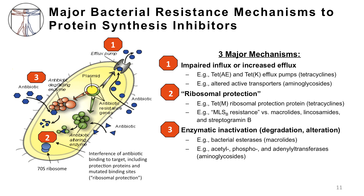With regard to the tetracyclines, the first two mechanisms are the most important. For example, bacteria may produce efflux pumps which pump tetracyclines out of the bacterial cell. Ribosomal protection is exemplified by the TETM ribosomal protection protein, which weakens the tetracycline attachment to its 30S target, thus freeing the ribosome of tetracycline inhibition and allowing protein synthesis to continue. With regard to the aminoglycosides, the first and third mechanisms appear most clinically relevant: impaired transport into the bacterial cell, or enzymatic degradation of the antibiotic in the cell by a number of different enzymes.